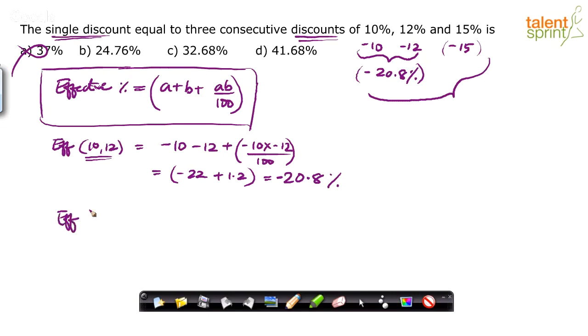So let's do that effective of minus 20.8 or, you know, minus or plus doesn't matter. The effective of 20.8 and minus 15. So what do you do? Then here also I'll put minus. Otherwise, some of you will get confused. Why didn't you use it? So minus 20.8 minus 15 plus minus 20.8 into minus 15 upon 100.